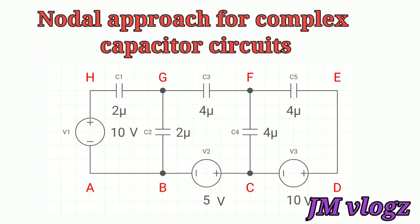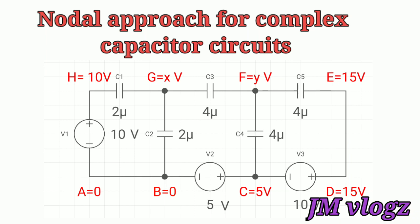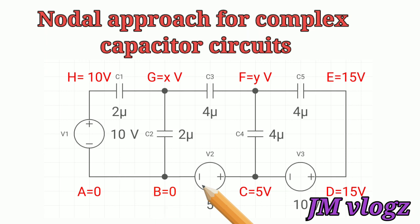First, we give names to the nodes as A, B, C, D, E, F, G and H. Next, we fix the lower and higher potentials. Junction A and B are both the negative side of two cells — 10 volt (V1) and 5 volt (V2) — so we fix A and B as the lower potential and equate them to zero.